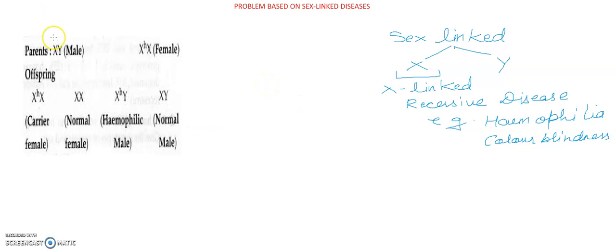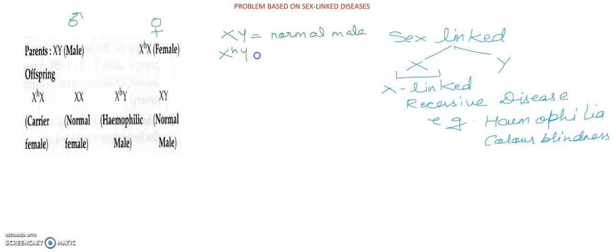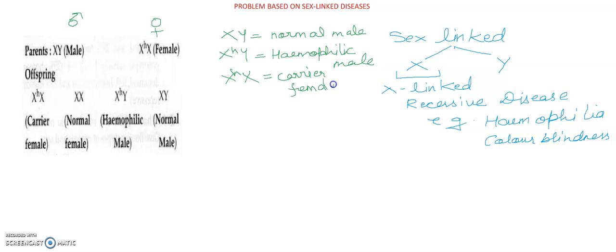I'm going to tell you about this flow chart. In this flow chart you can see the parents — this is the male symbol and this is the female symbol. As I told you in my last videos on sex-linked inheritance: X Y written means normal male; X^H Y means hemophilic male, that is a male suffering from hemophilia. In this chart, the male is normal and the female is a carrier — X^H X means this female is normal but carrier. A female can be a hemophilic carrier, but in the case of males, there is never a carrier.